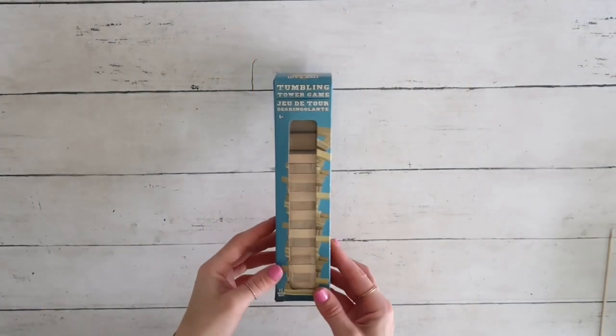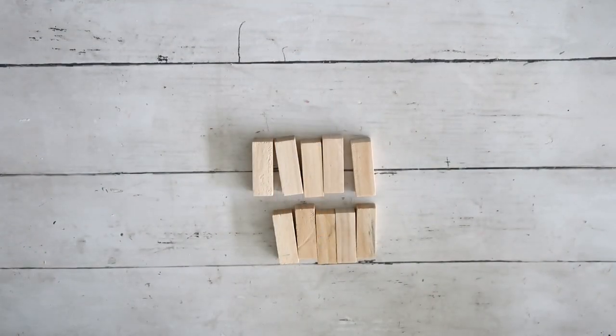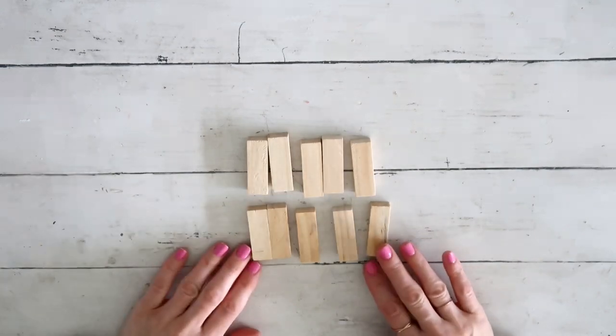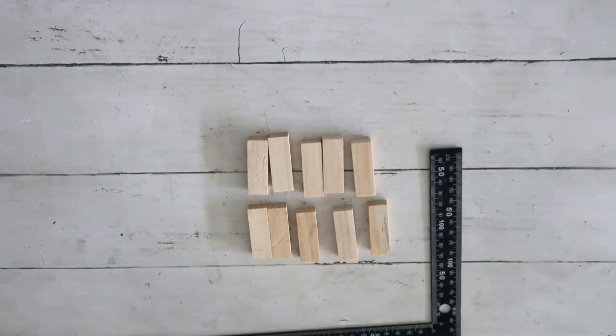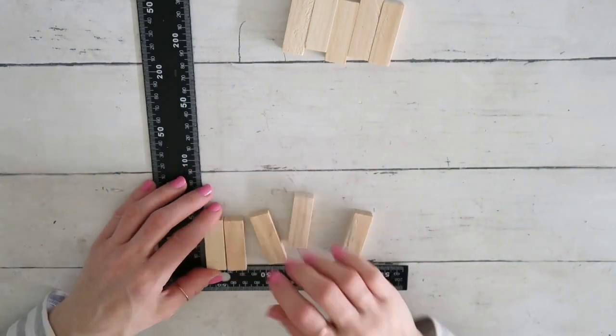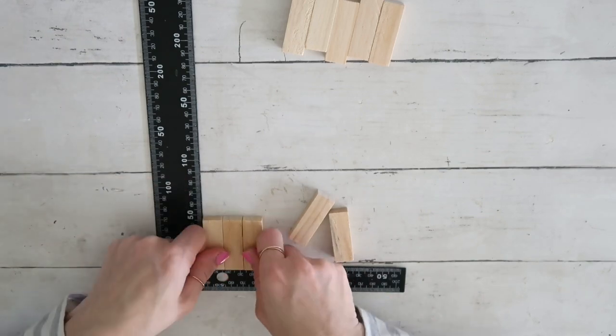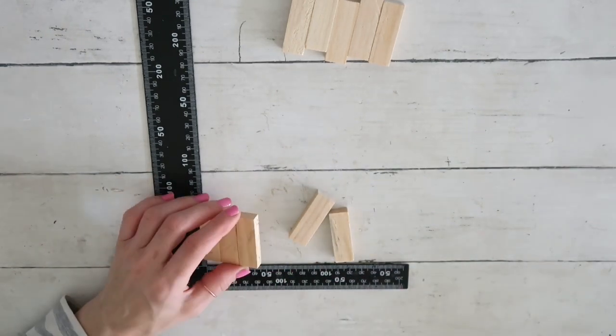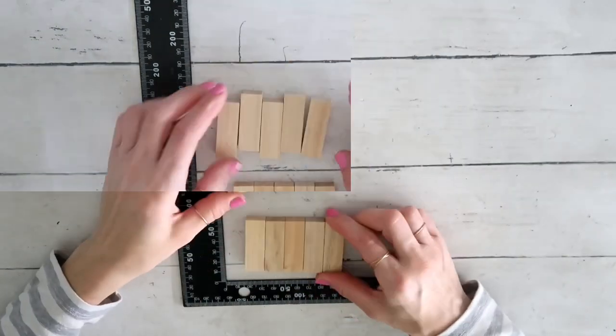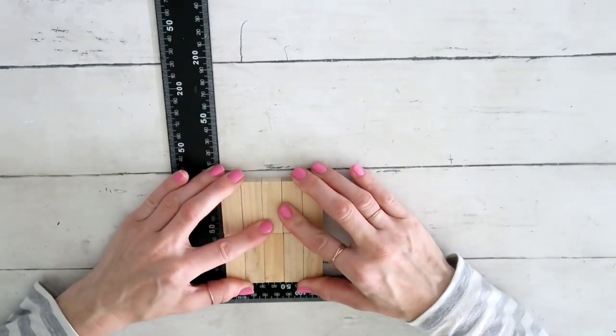On to DIY number two. I'm going to be using this tumbling tower blocks from the Dollar Tree. I'm going to first take 10 of them and I will hot glue five next to each other. Just hot gluing next to each other. If you want, you can certainly use wood glue or any other glue that you have. My hot glue is pretty sturdy, so that's why I use that.